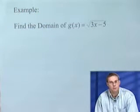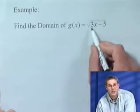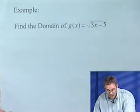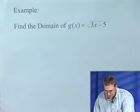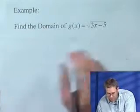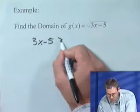Here's a function with a square root. Now remember, we can never plug a negative number inside a square root because we cannot take the square root of a negative. So let's try to figure out this domain. Well, what has to be true about 3x minus 5? Well, 3x minus 5 has to be greater than or equal to 0.